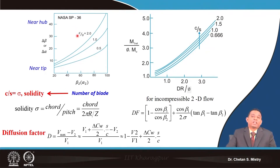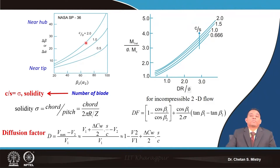For a particular angle and particular delta beta, you can assume or get the c by s value. If the angle is out of range, interpolation is needed, which may lead to some changes; later the diffusion factor calculation allows modification. Remember that solidity varies all the way from hub to shroud because the radius is varying and pitch is defined as 2 pi r divided by z, so solidity always varies from hub to shroud.